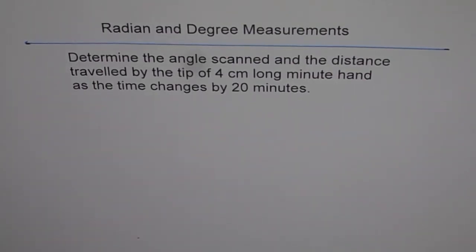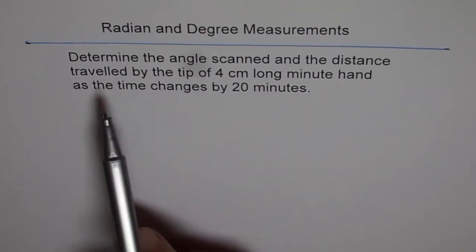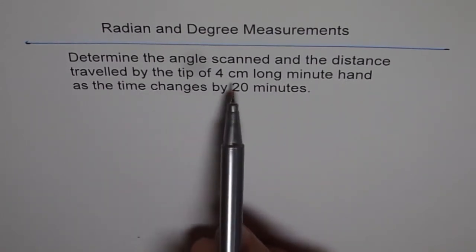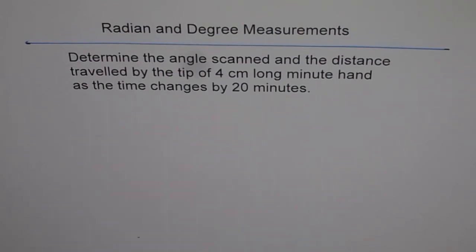Radian and degree measurements. Determine the angle scanned and the distance traveled by the tip of a 4 cm long minute hand as the time changes by 20 minutes.